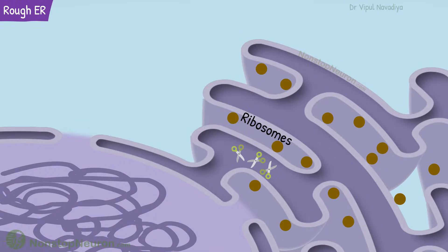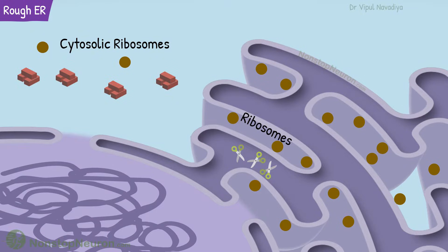These ribosomes synthesize proteins that are to be exported out of the cell and membrane proteins. The proteins to be exported enter the endoplasmic reticulum right when they are being synthesized. The cytoplasm also contains free ribosomes, which synthesize the proteins required in the cytosol. Once synthesized, these proteins cannot cross the membrane. Thus, proteins for the cytoplasm and proteins to be exported are kept separate right from synthesis.